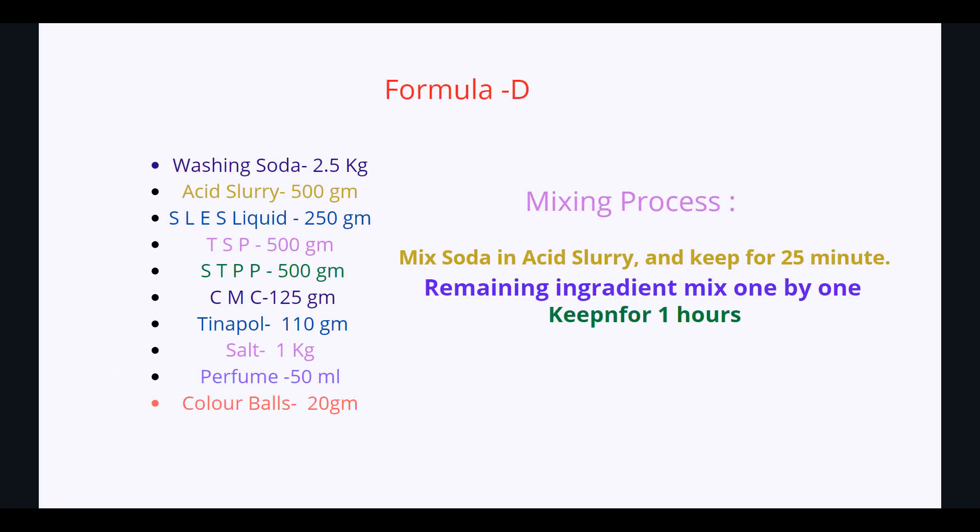Formula D: washing soda 2.5kg, acid slurry 500g, SLES liquid 250g, TSP 500g, STPP 500g, CMC 125g, Tinopal 110g, salt 1kg, perfume 50ml, color ball 20g. Mixing process: mix soda in acid slurry and heat for 25 minutes, then remaining ingredients mix one by one. Keep for one hour.